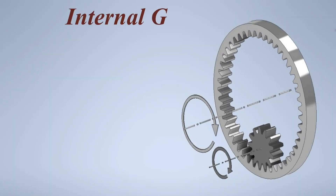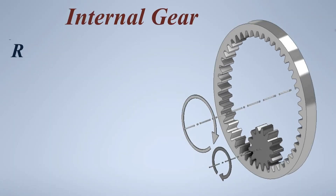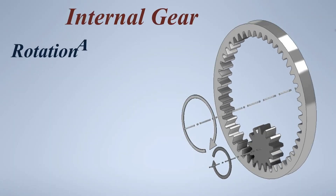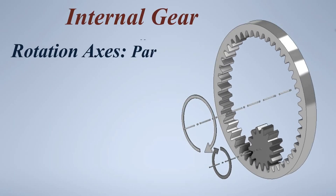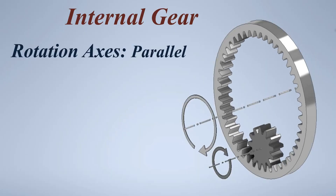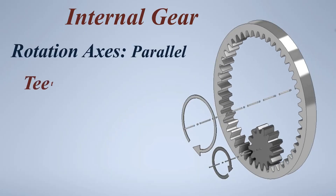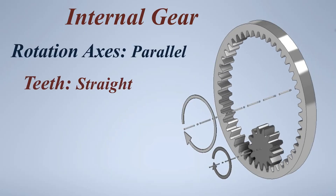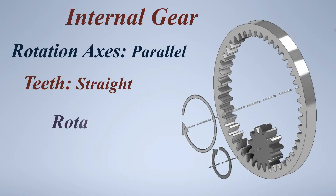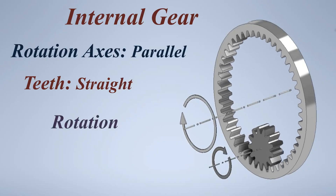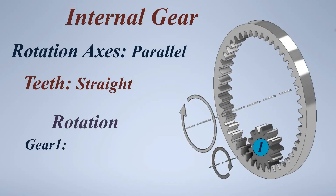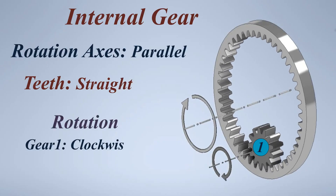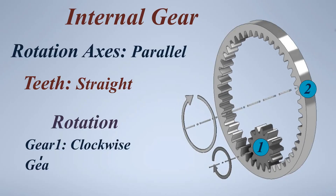Internal gear. Rotation axis: parallel. Teeth: straight. Rotation — Gear 1: clockwise, Gear 2: clockwise.